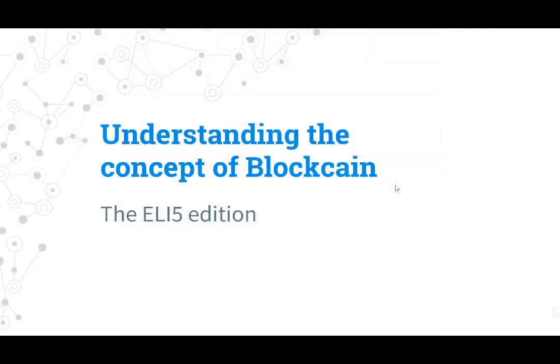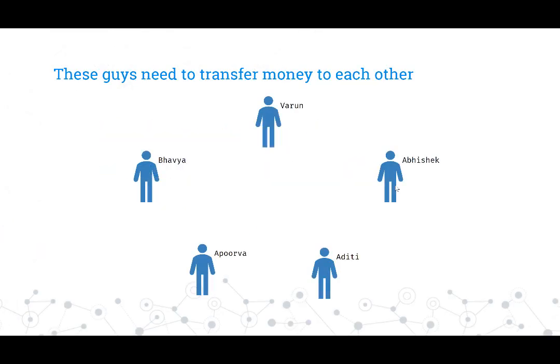Let's understand blockchain in 'explain like I'm five' fashion. Consider five people — Varun, Abhi, Sheikh, Bhavya, and Aditi — who want to transfer money among each other. We take a piece of paper and start writing who transfers money to whom. The assumption is that all of them already have some amount of money, so when we talk about Varun giving Aditi 10 rupees, Varun already had more than 10 rupees.